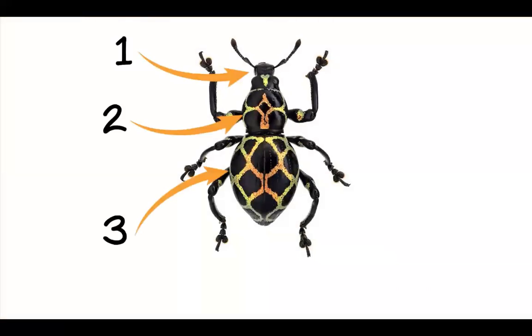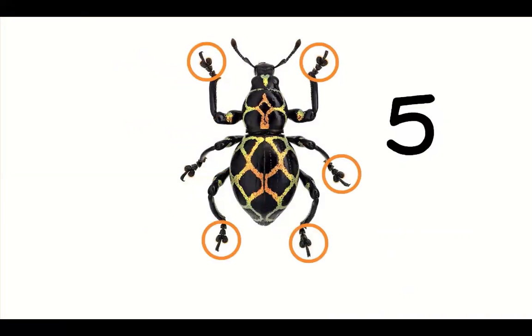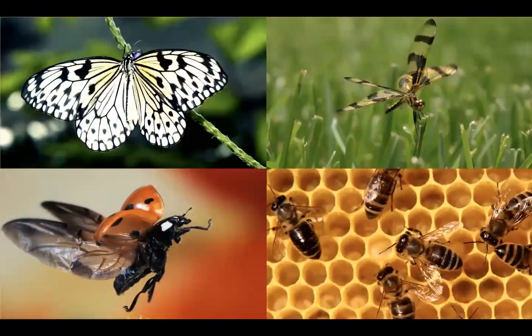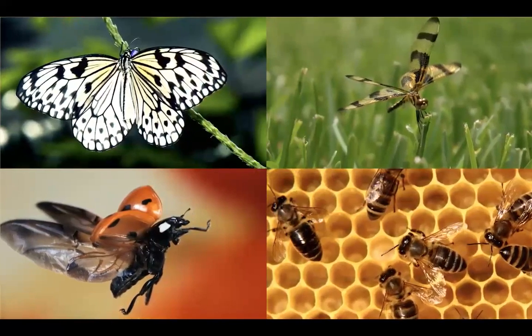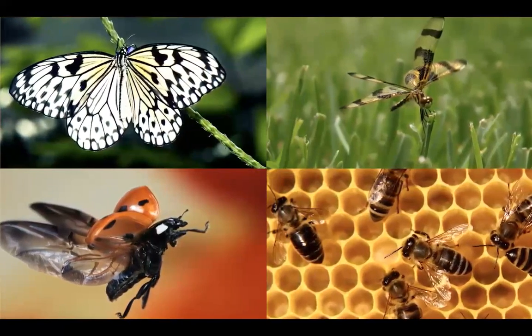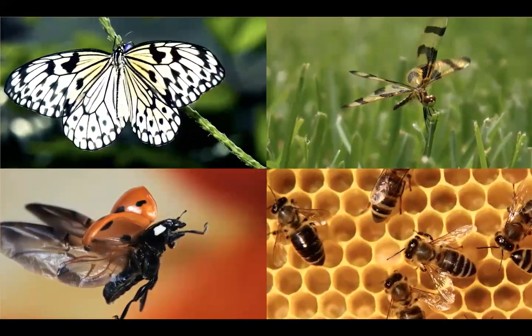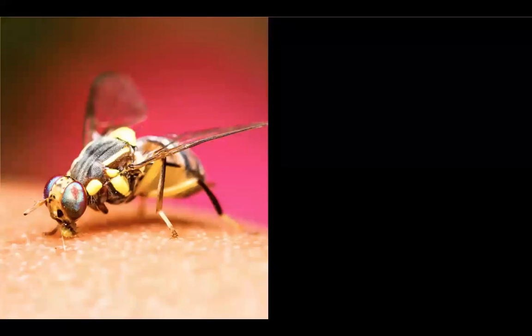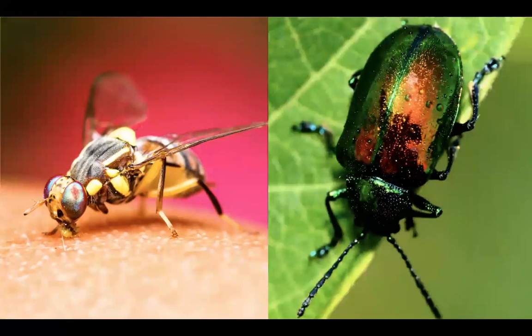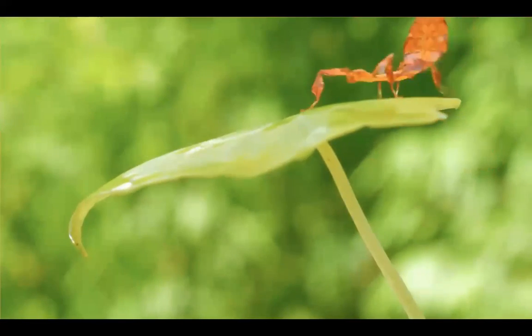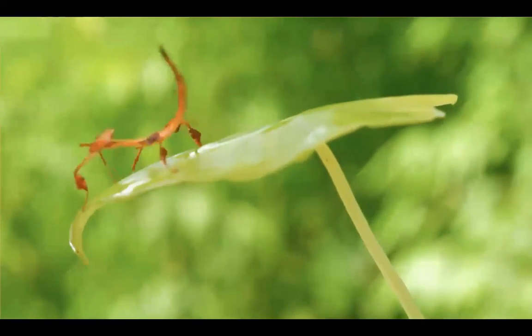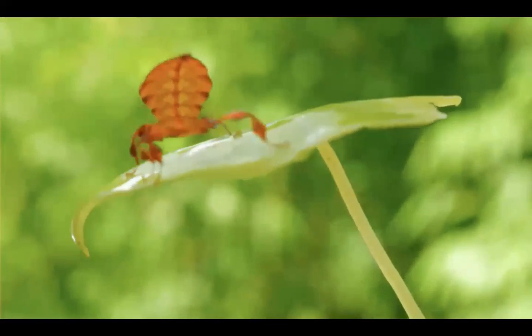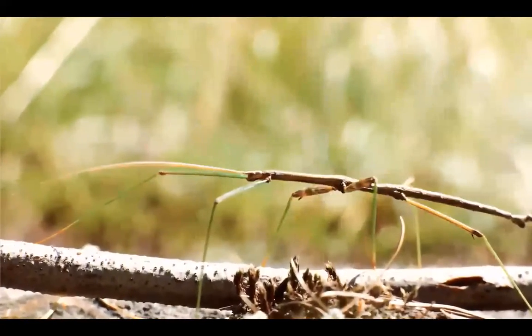Insects are animals that have three body sections and six legs. Some insects have wings, like butterflies, dragonflies, ladybugs, and bees. Look at the different shapes and colors of their wings. There are many different colors of insects — look at how colorful this fruit fly is, and this beetle. Look at how this lightning bug's body glows. Insects have all sorts of different shapes: leaf bugs have flat, round bodies that look like leaves, and walking sticks have thin, long bodies that look like sticks.